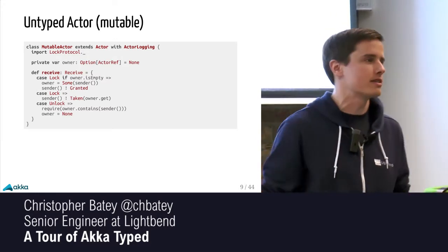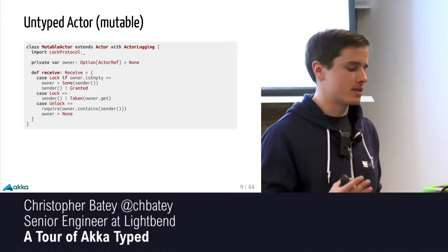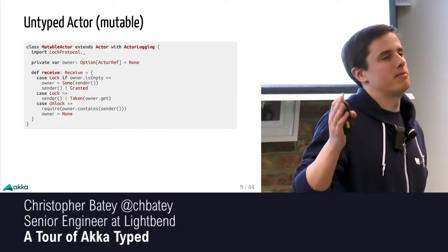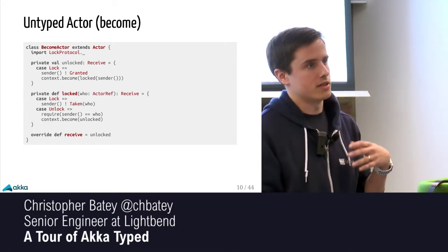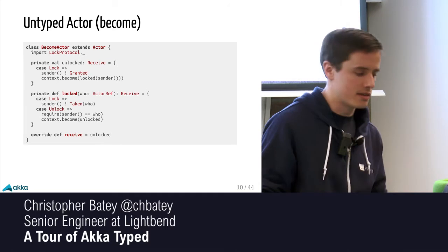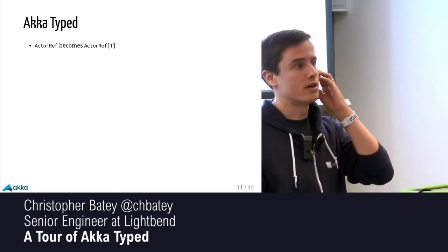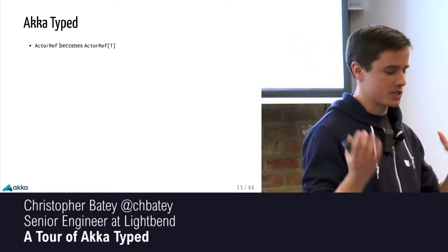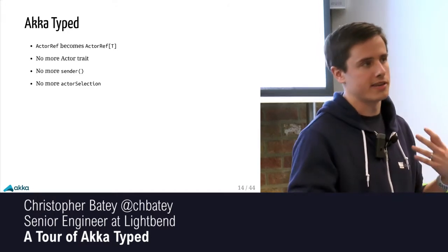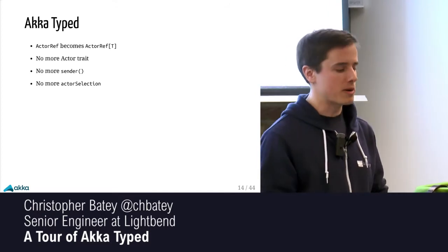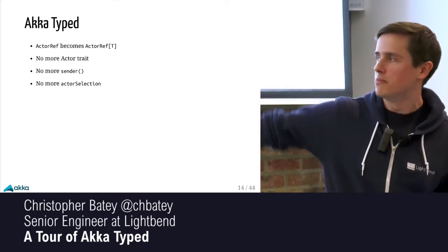Is this easy to understand? You're trying to work out which messages we can receive by looking at a pattern match, which can be hard to grok. Most people who've used Akka would probably write it using become, getting rid of the mutable state, representing it more as individual states. So if we're in unlocked, we only really care about the lock message, and transition using become to the locked state. We store our state by building this function and calling become locked with the sender reference. This pattern is exactly what Akka Typed looks like.